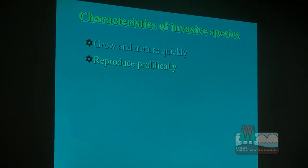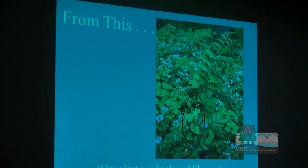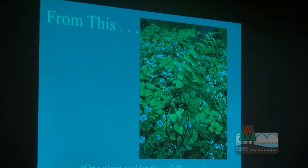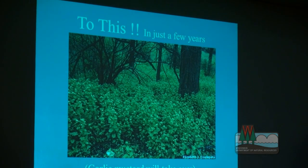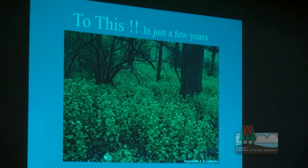A lot of these plants will reproduce very prolifically, both vegetatively and by seed. Here's an example of garlic mustard in a nice stand of wildflowers — and very quickly, within five years, you can go from that to a complete takeover. That's why it's really important to get early detection before they start spreading their seeds. These things have a tendency to really reproduce and take over very, very quickly.